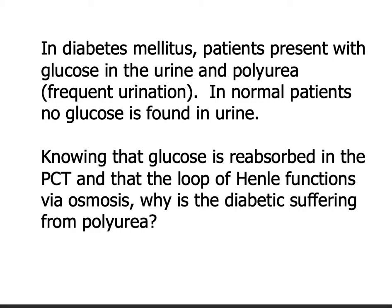Recall that water is reabsorbed everywhere except the ascending limb. Sodium is reabsorbed in the ascending limb. By the time the filtrate reaches your loop of Henle, you should not have any glucose there. Having glucose in the filtrate in your loop of Henle interferes with the ability of water to leave. Normally, the filtrate coming down the descending limb of Henle loses lots of water freely because of the sodium that leaves in the ascending limb — that sodium in the interstitial space attracts water.